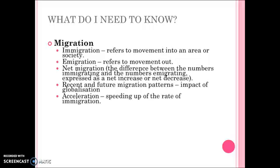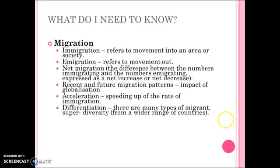Key terms linked to migration include acceleration — according to the UN, international migration increased by 33% in just 13 years from 2000 to 2013. There is also differentiation: there are many different types of migrants; students are a major group, with more Chinese-born postgrads than UK-born ones. Superdiversity refers to the fact that migrants come from a wider range of countries, and even within a single ethnic group individuals differ in legal status, culture, religion and are widely dispersed throughout the UK, with class differences among migrants too.